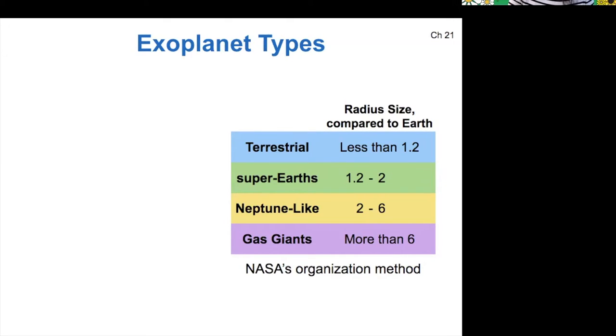Some of these are familiar, right? We have terrestrial planets, which have less than 1.2 Earth radii.